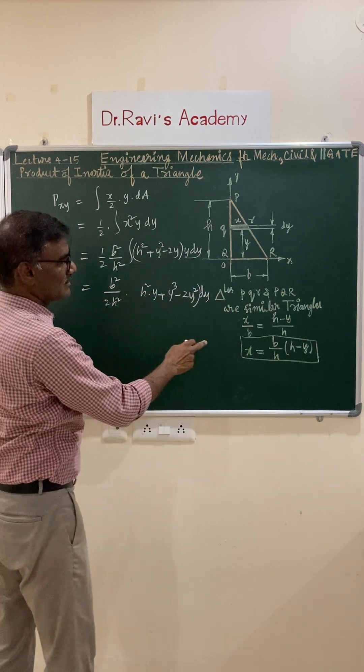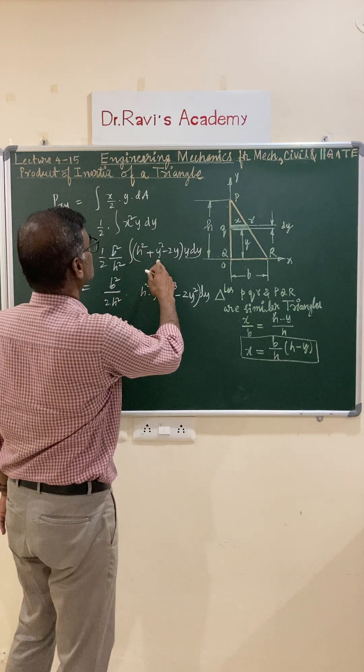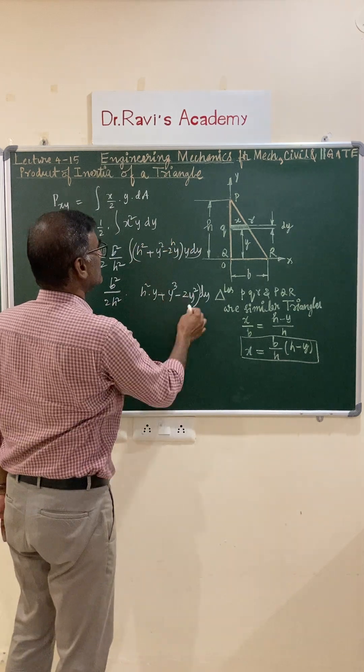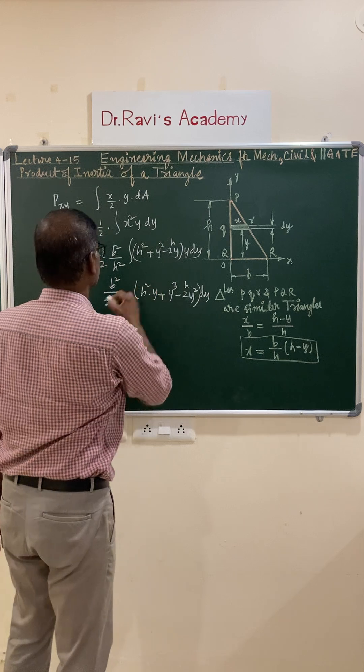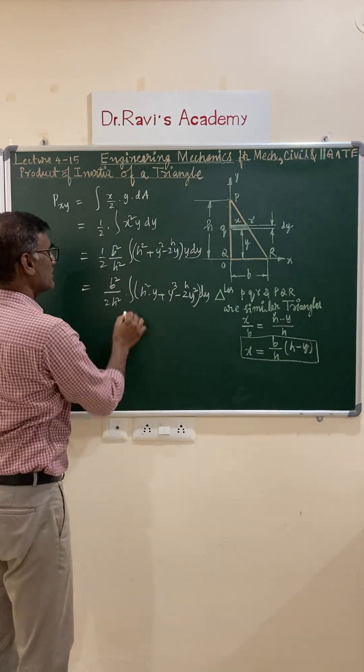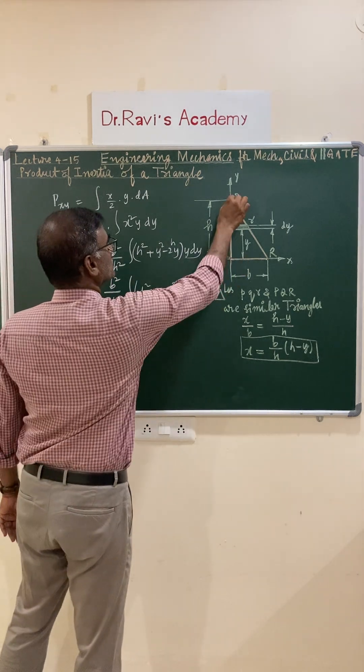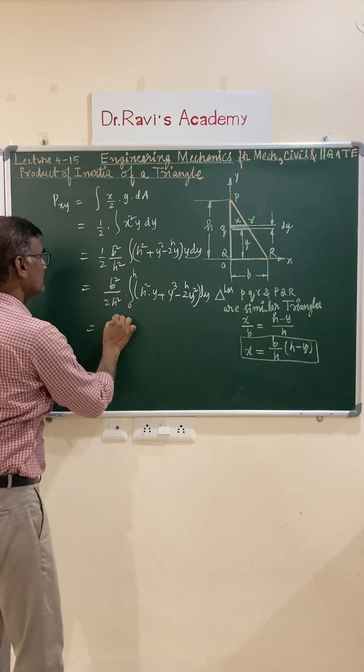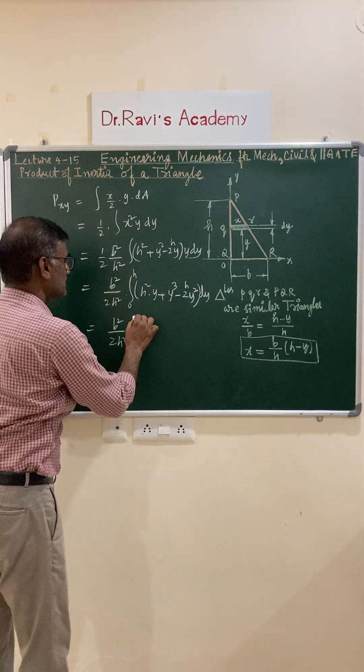Now the limits of integration are 0 to h. You have b squared by 2h squared.